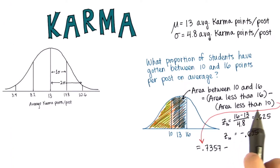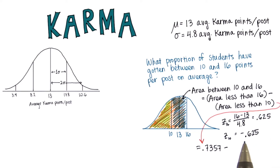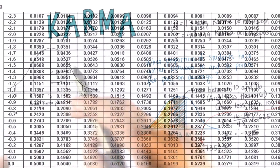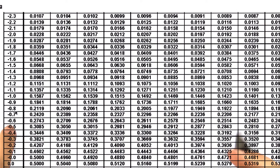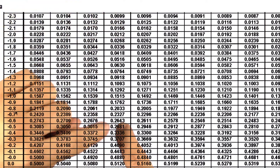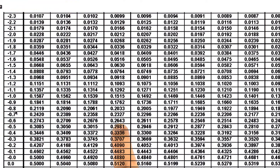Then we'll subtract the area less than 10, which has a z-score of negative 0.625. Here's negative 0.6, and here's the column for 0.03. So the area less than negative 0.63 is 0.2643.